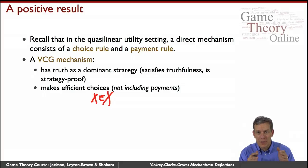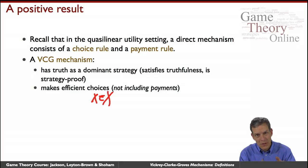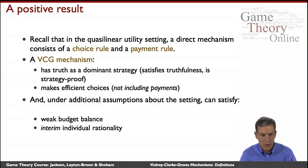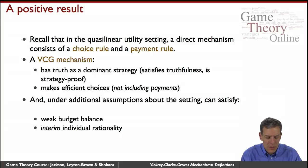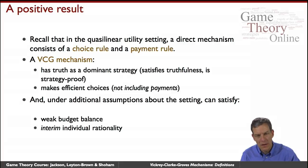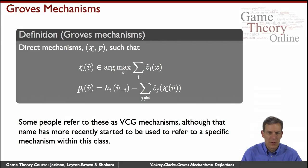The quasi-linearity is going to be critical here in making sure everything works. We're looking at private values — conditional utility independence in general. Under some particular settings, we'll be able to get additional things like a weak budget balance condition, interim individual rationality, and other nice properties. But the key ingredients here are going to be dominant strategies and efficiency.